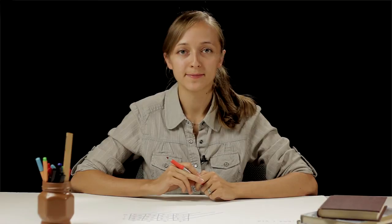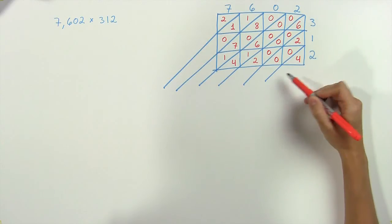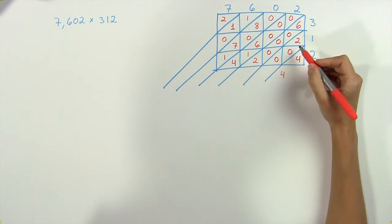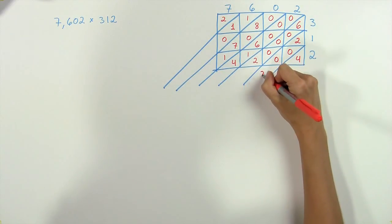Now that we've filled our grid in, all we have to do is add up the diagonal lines, starting with the right one. Since there is only one number here along this diagonal line, we go ahead and write the four at the bottom. Next we add up the next set of diagonal lines. So here we have two plus zero plus zero, which is two.